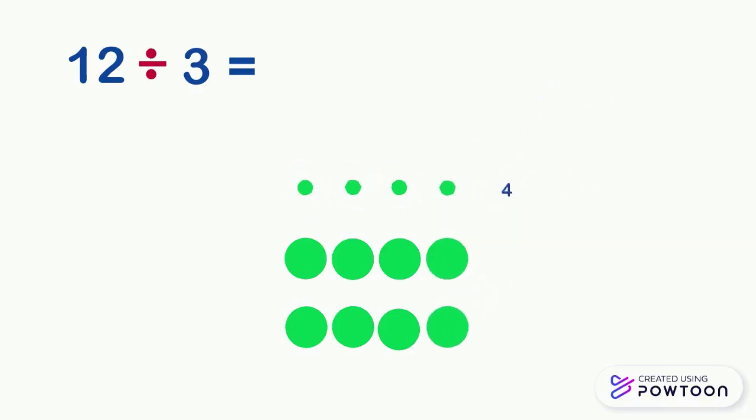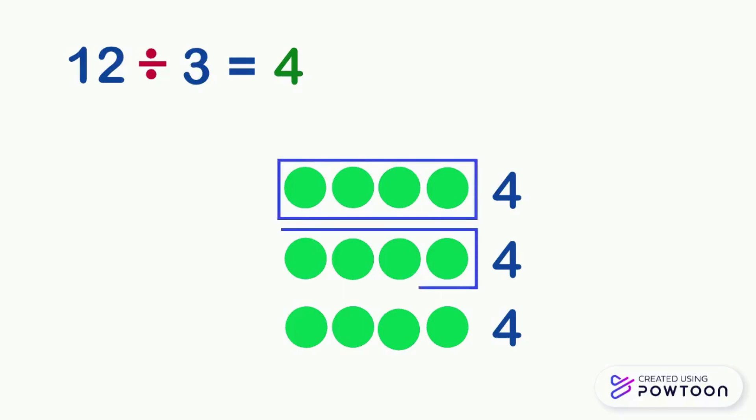And we see that we have 4 pawns in each row, so 12 divided by 3 equals 4. If we know the multiplication tables, we can check that our work is right. 3 rows of 4 pawns each gives us 3 times 4 equals 12.